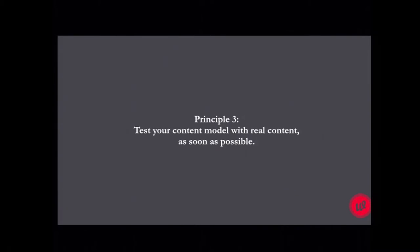Don't be more granular than you can imagine ever needing to be, but do have a bit of imagination and think about what you might want to do in two years' time. If you're building a site now and can think of something that might make the content model better for future devices — like the Apple Watch — go ahead. It's probably things like constraining your titles to around 40 characters, because you can imagine the truncation horrors when content appears on a small screen. The third principle is to start testing your content model with real content as soon as you possibly can.